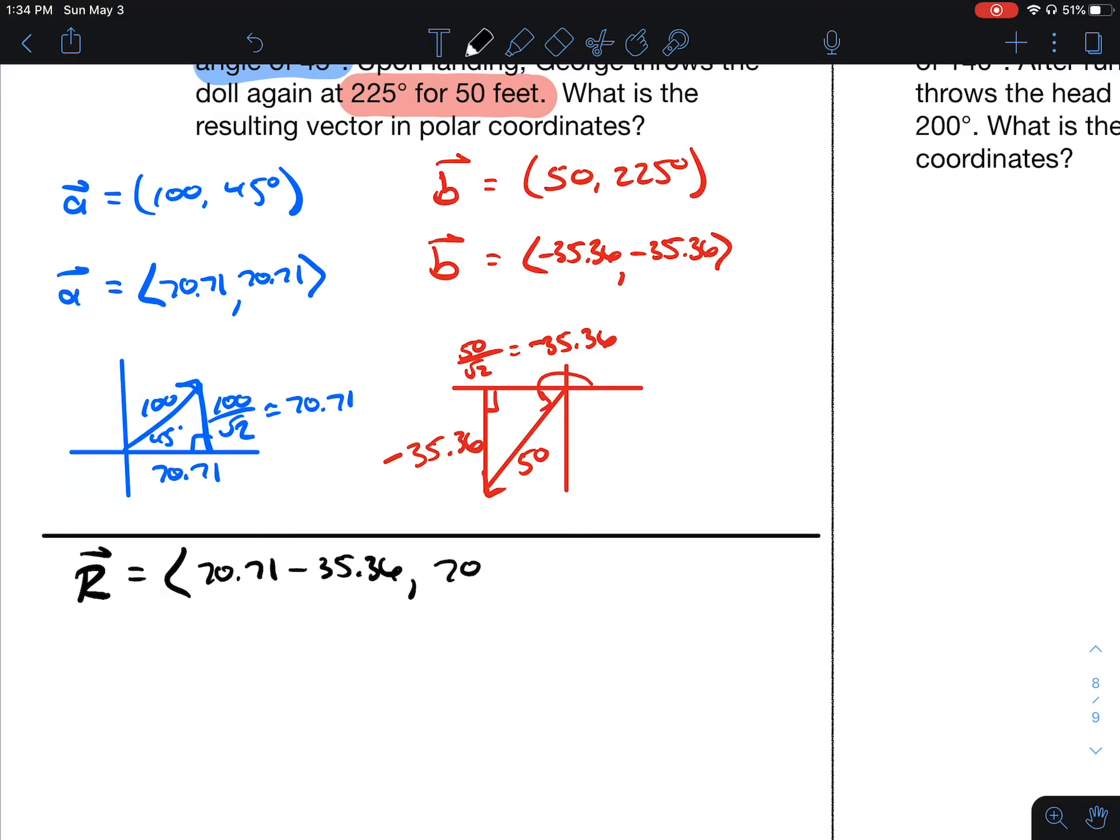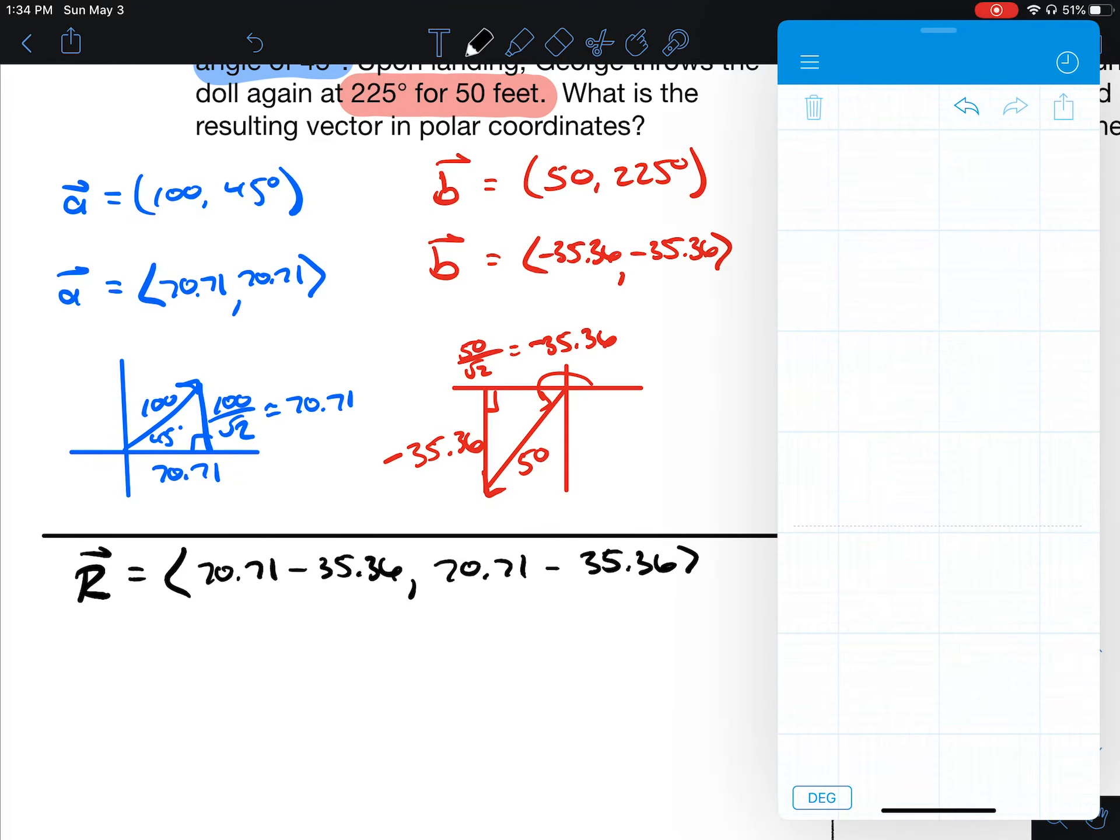followed by 70.71 plus negative 35.36. And that resultant is 35.35 in the x and y direction.